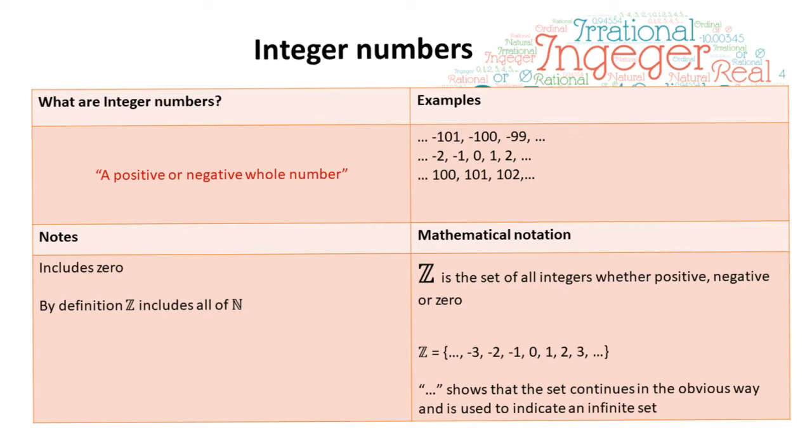Next, we have integer numbers, which you'll be very familiar with from computing programming. Integer numbers are any positive or negative whole number. And again, the set continues in both directions. This, of course, includes zero. And by definition, the set Z, which is the set of all integers whether positive or negative, also therefore includes N, the set of natural numbers.